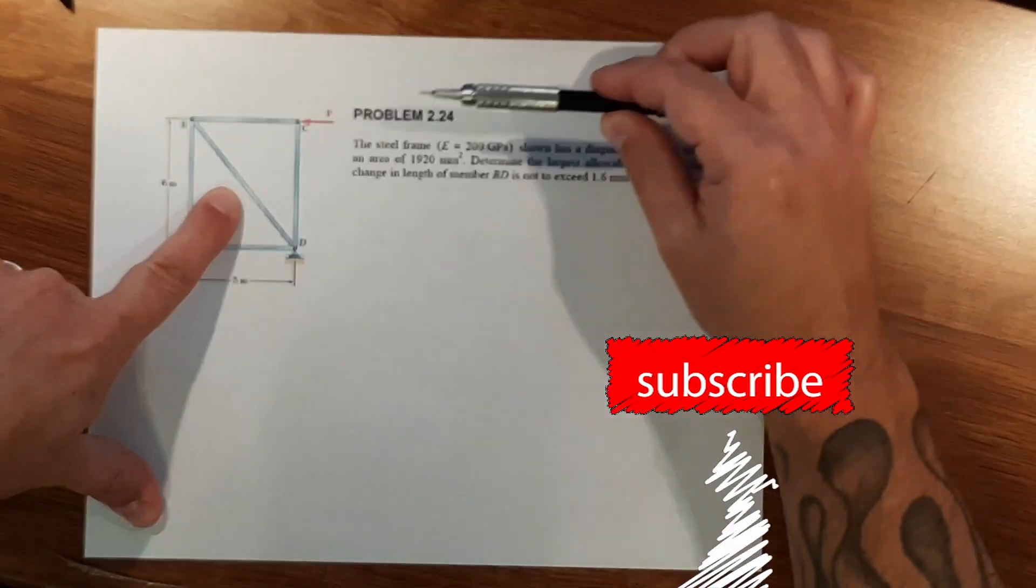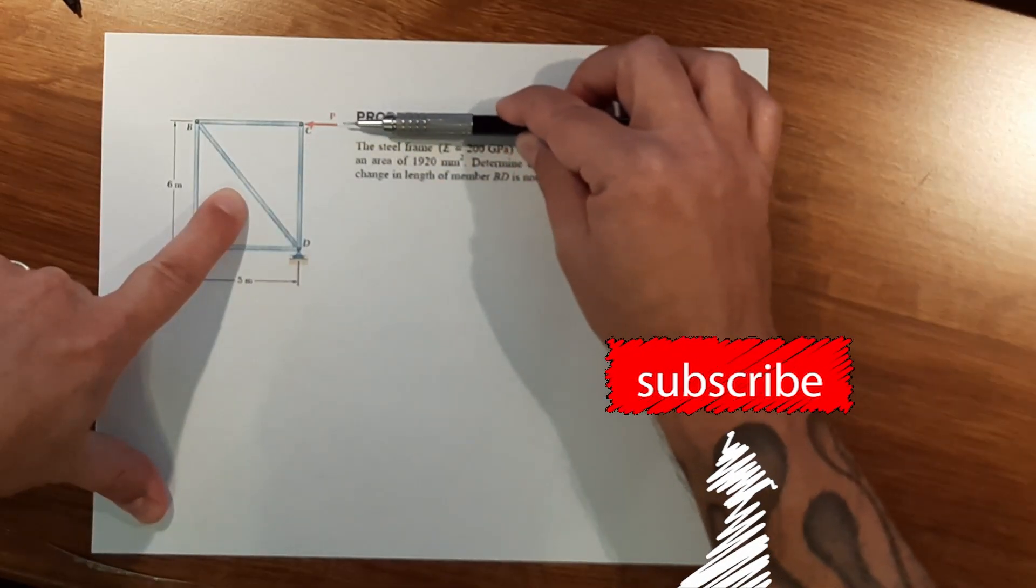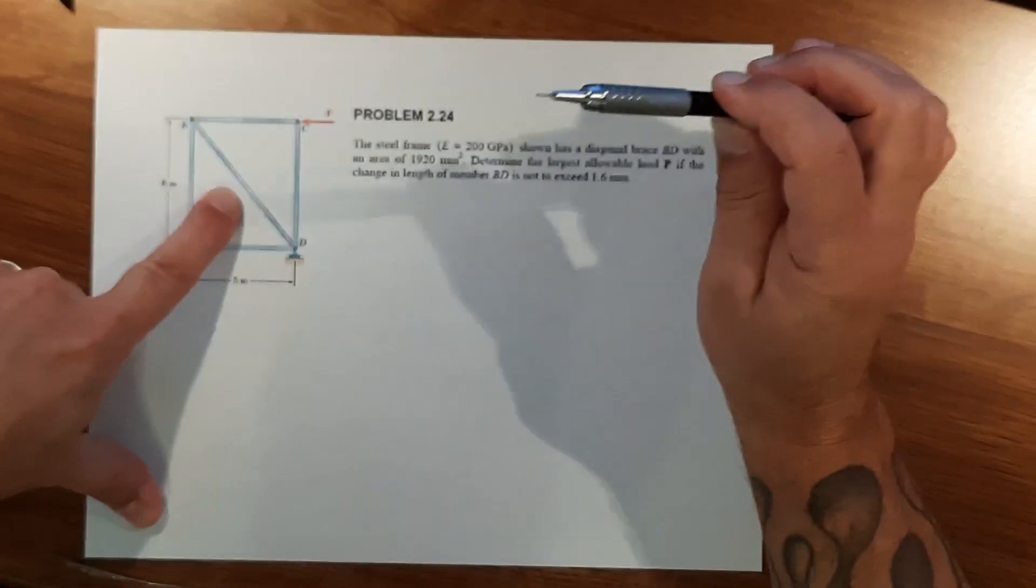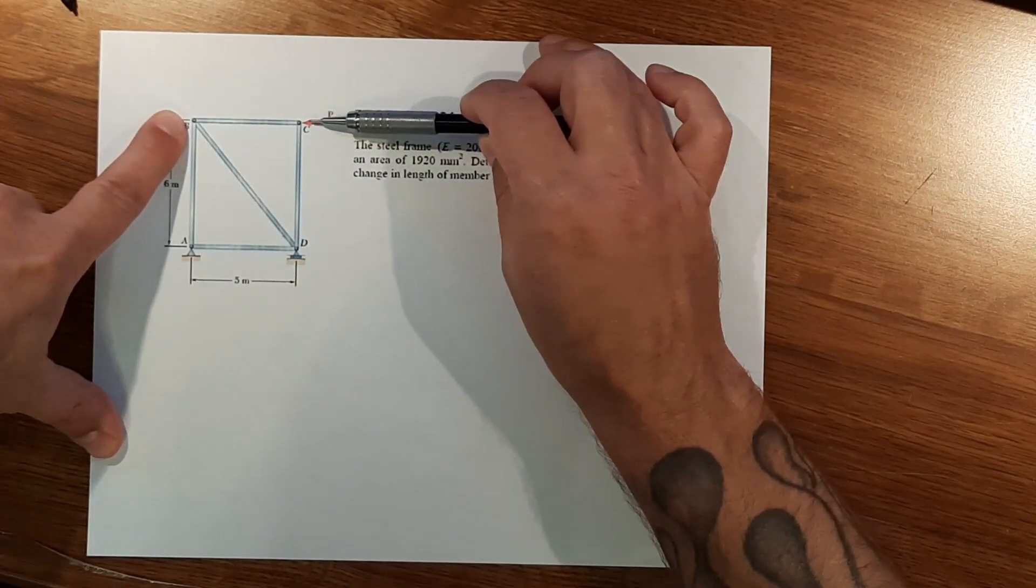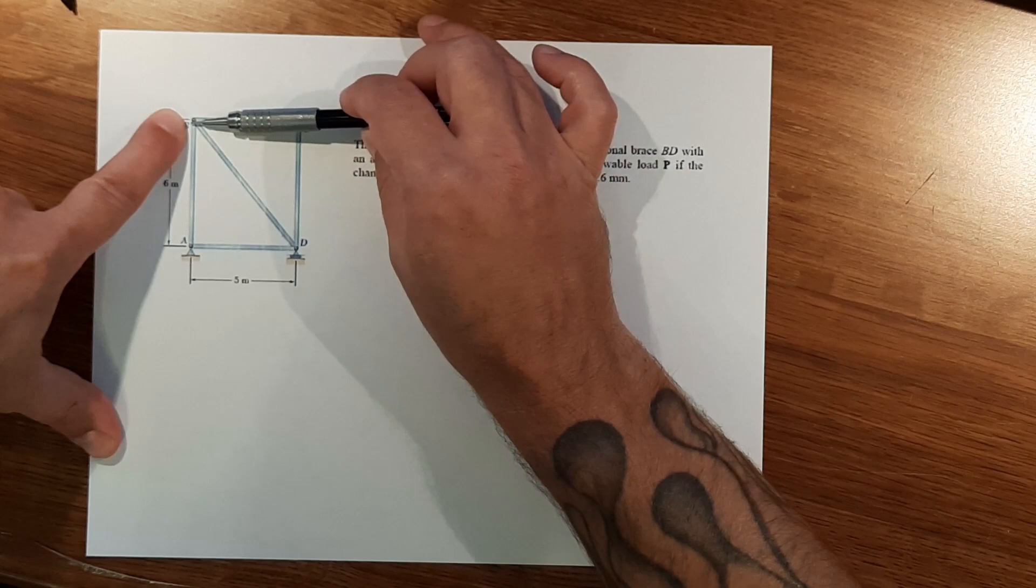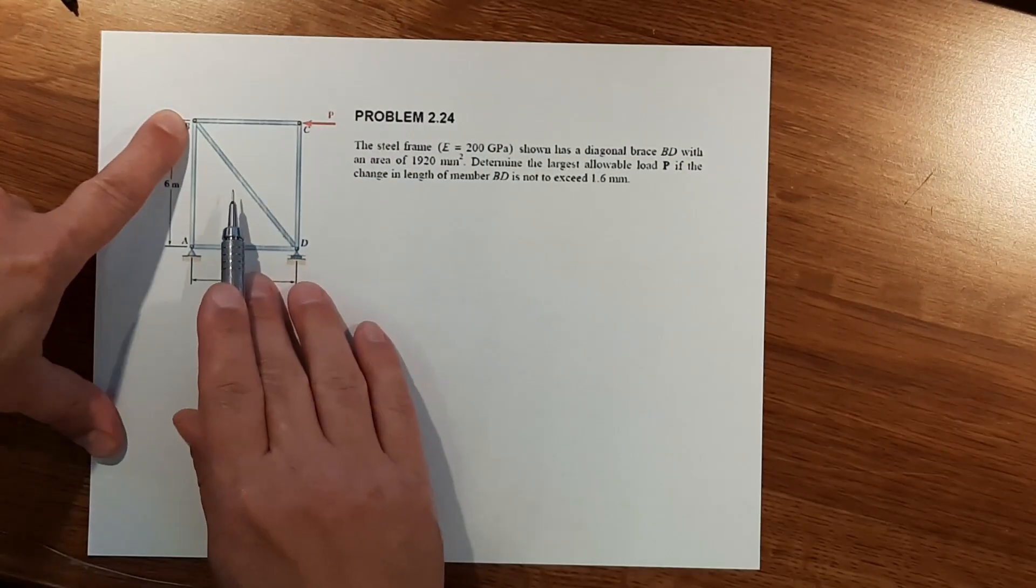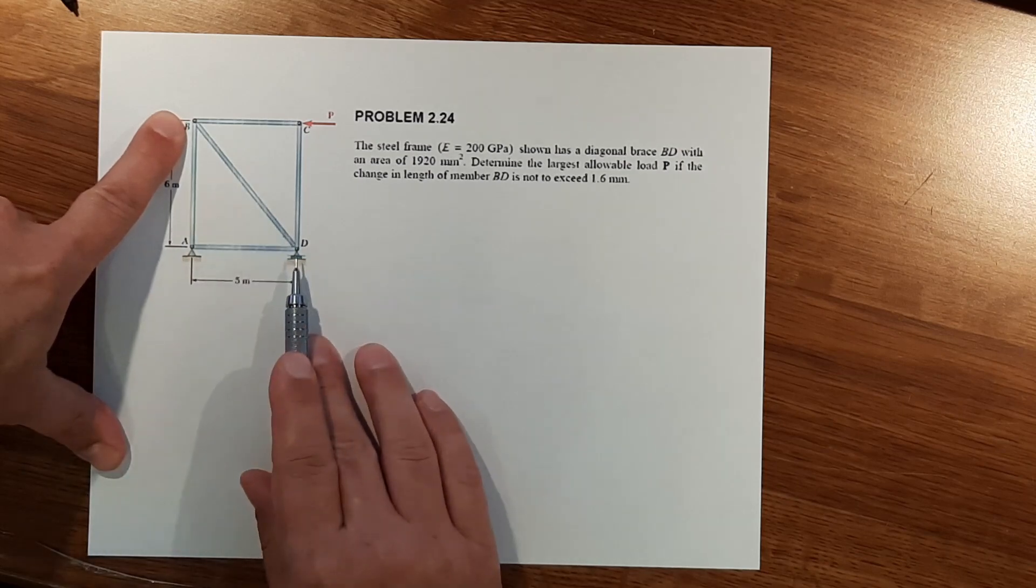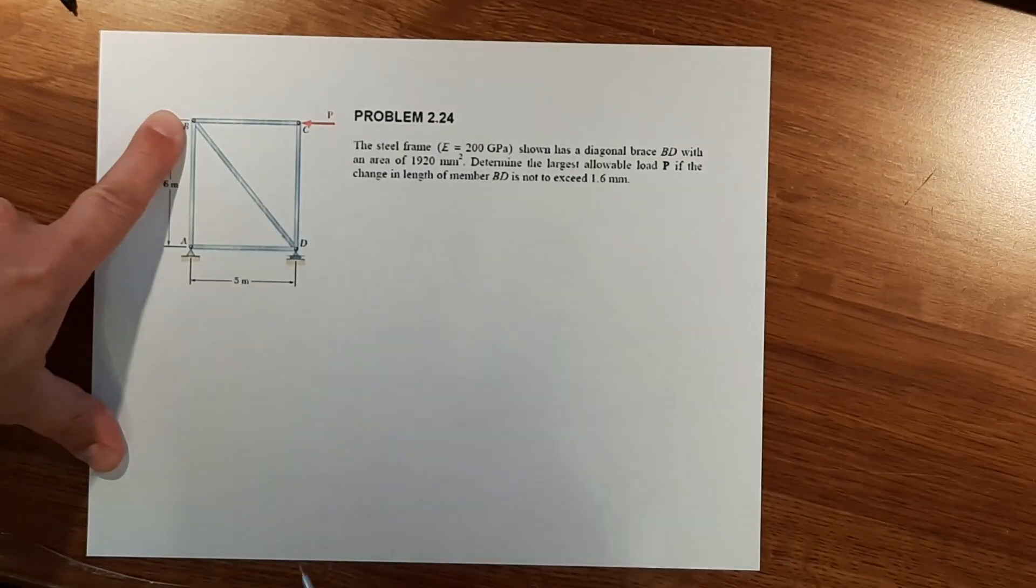What that's saying is I want to put a load on point C here of amount P, but I want to push as much pressure as I can through here to the point where I don't exceed stretching this member BD any more than 1.6 millimeters.